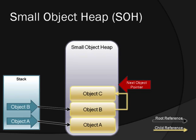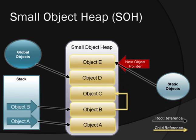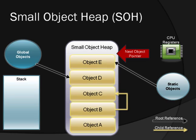The black arrows are root references. The yellow arrow represents a child reference pointed to by one of our own classes. As well as the stack, root references can be held within globals, within statics, and the CPU registers. .NET assumes that any object that has a root reference is still in use by the application. When an object is no longer in use, it loses its root reference. Object A and B lose their root references when the function allocates and finishes. A and B are now rootless, but so is C. Because C is pointed to by object B, it hasn't actually got a root reference, and so it's rootless as well.